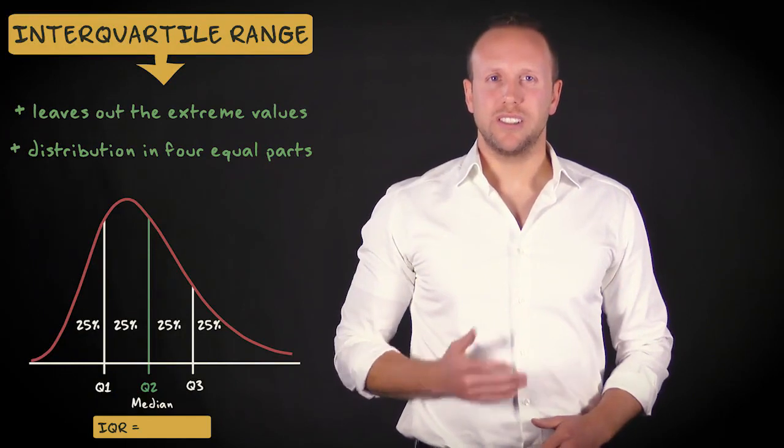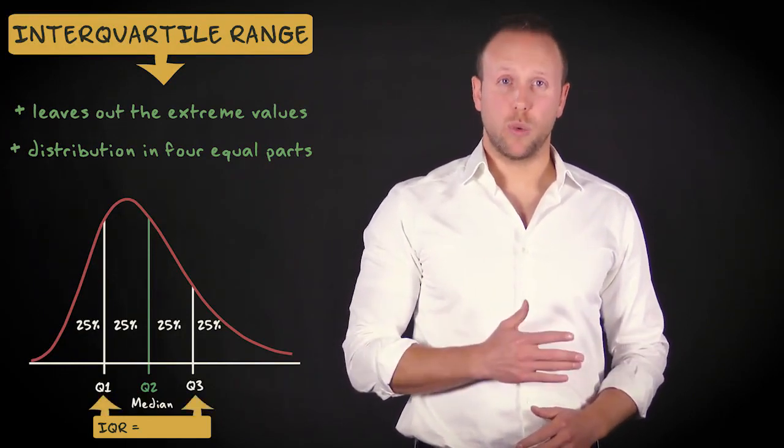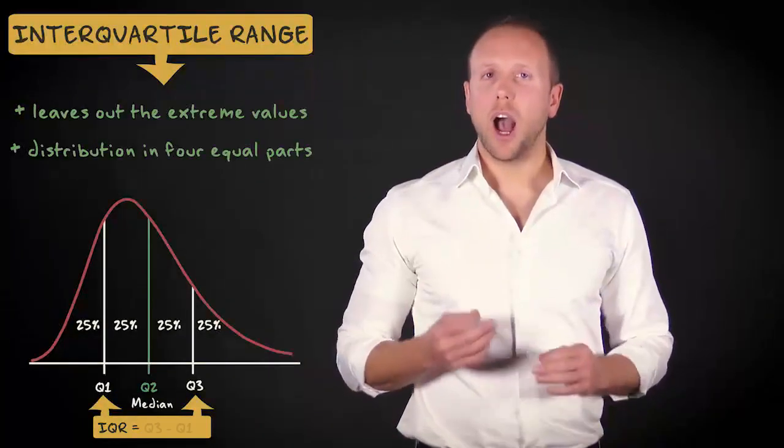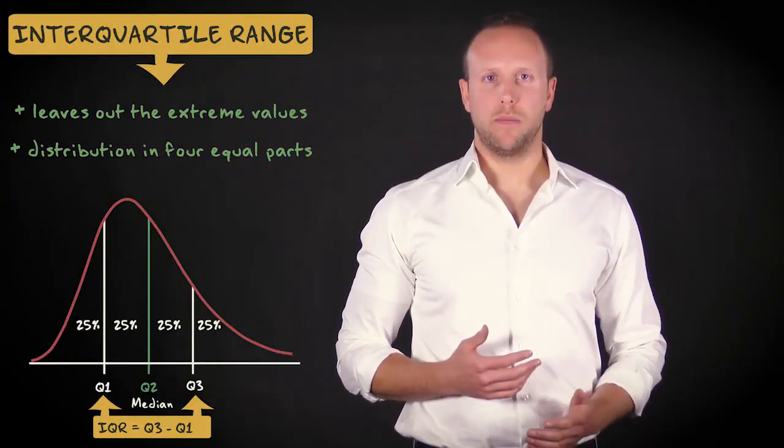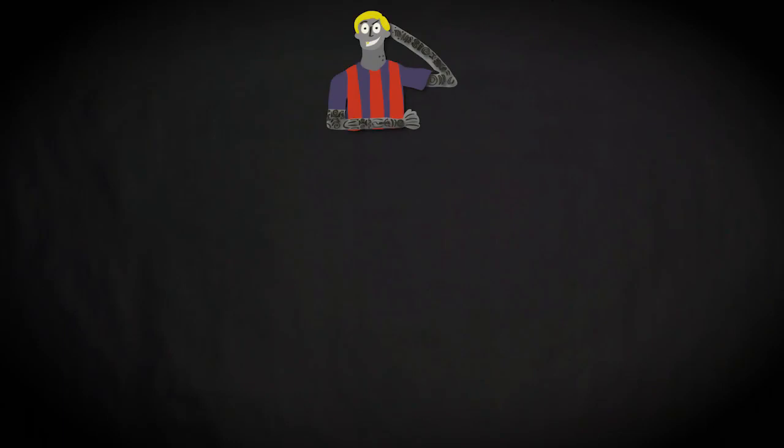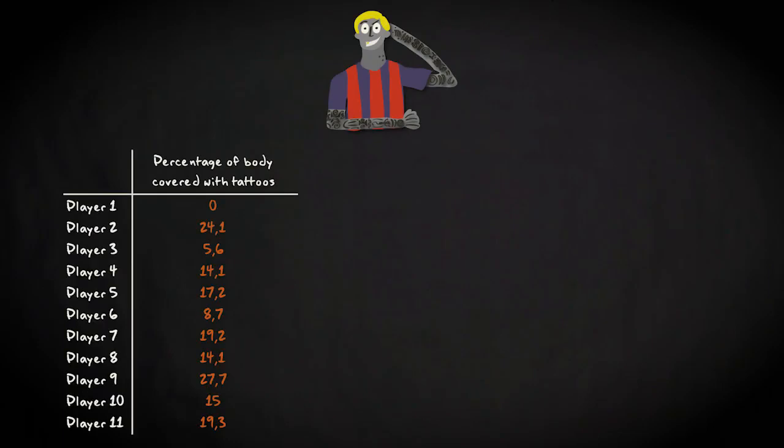The interquartile range is the distance between the third and the first quartile, or in other words, IQR equals Q3 minus Q1. Let me show you how to compute it, by going back to the tattoo density example. This is what the distribution of team 2 looks like.